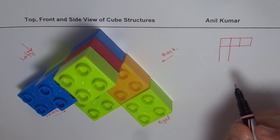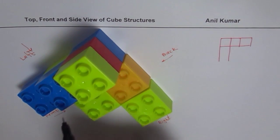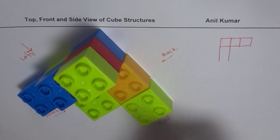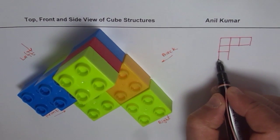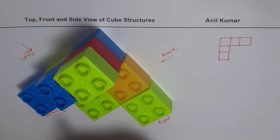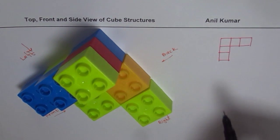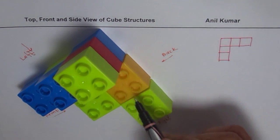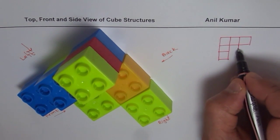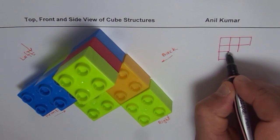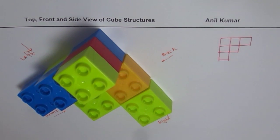So these three blocks, and these three blocks I'm drawing on that side — one, two, and three. Now if you see from the top, we have one right there also, so we'll sketch that one here as well. So that becomes the top view.